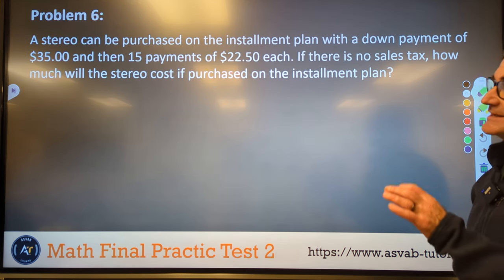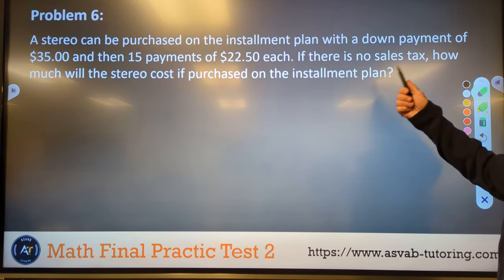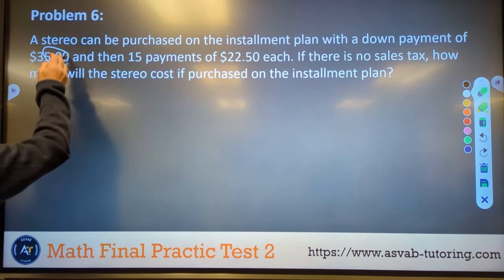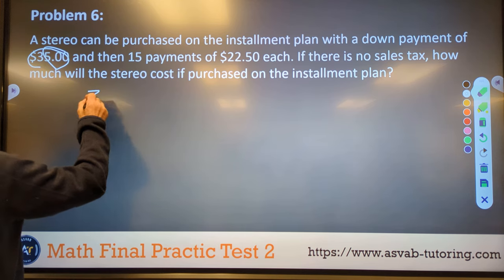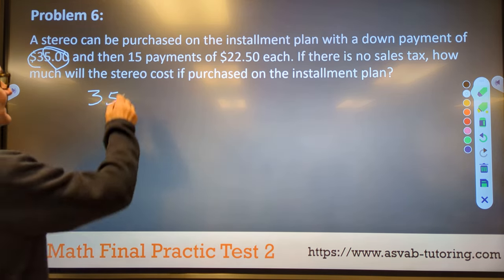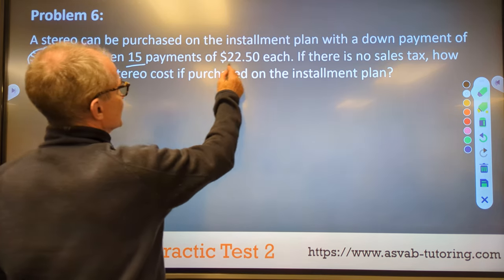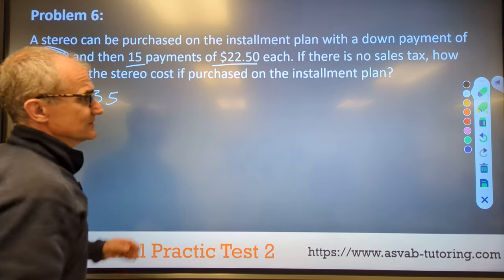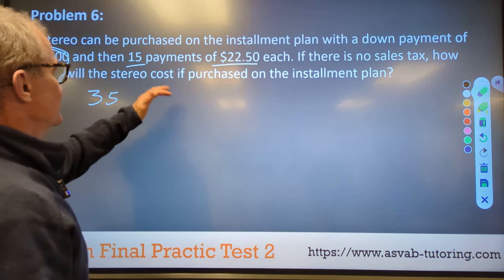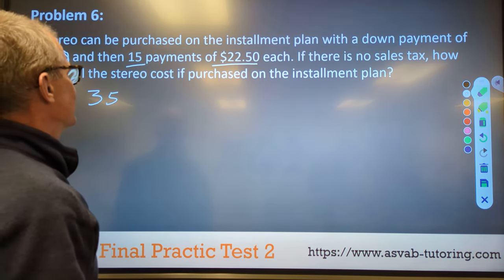Problem number six, a stereo can be purchased on the installment plan with a down payment of 35 bucks. So that's a flat fee. We don't want to forget that. So put 35 here. Make sure we add that in. And then 15 payments of 22.50. There is no sales tax. How much will the stereo cost if purchased on the installment plan?